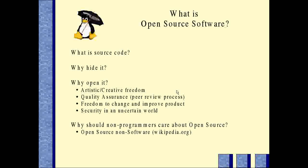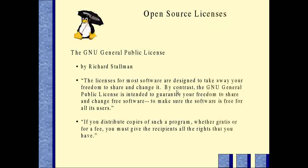That covers a few reasons why even non-programmers should care about open source software. Let's talk about open source licenses. There are basically two major groups. The first is called the GPL, or GNU General Public License, invented by Richard Stallman in the 1980s. It says that if you get software licensed under the GPL, you can change it, modify it, share it, and distribute it in either source code or machine code. But if you make copies or changes and distribute them, you must give out the source code on the same basis it was given to you.